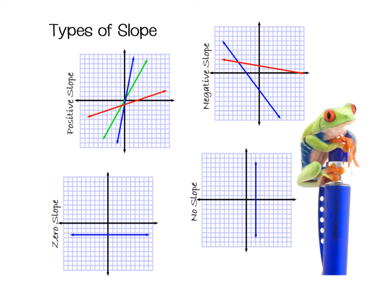First of all, just a reminder, there are four types of slope: positive slopes, negative slopes, zero slopes, and no slopes. We read a graph going from left to right, just like we read words going from left to right. So if our graph is increasing as we go from left to right, it's going to be a positive slope. If it's decreasing as we go from left to right — it's going downhill — it's going to be negative. A zero slope is going to be a horizontal line. And a no slope, sometimes called an undefined slope, is a vertical line.